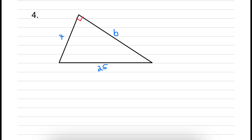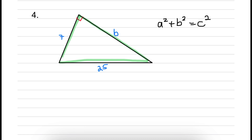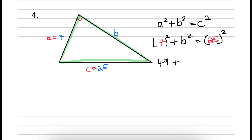Moving on to question number 4. We have a short side given as 7 units, another shorter side which is b, and the longer side of this triangle given as 25. Now, how do we know 25 is the longer side and not b? Because the hypotenuse is always opposite the 90-degree angle. Our formula is A squared plus B squared equal to C squared, and we'll leave it like this because we're trying to solve b. Let A be 7 and C be 25. 7 squared is 49 and 25 squared is 625.